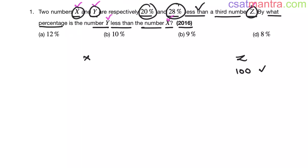Now, X is 20% less than Z. What is 20% of 100? It is 20. 20% less than means 100 minus 20, that is equal to 80. So X value is 80.